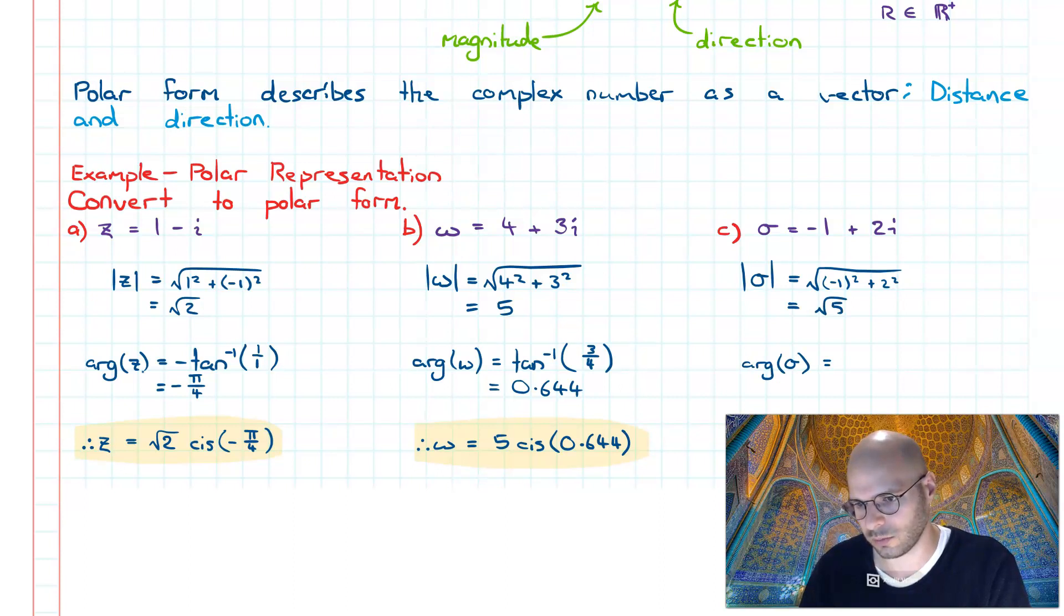Argument of sigma is going to be, well let's think about this. Our Argand diagram would look like this: our real component's negative, so we're in this region, and then our imaginary is positive, so we're pointing up like this.